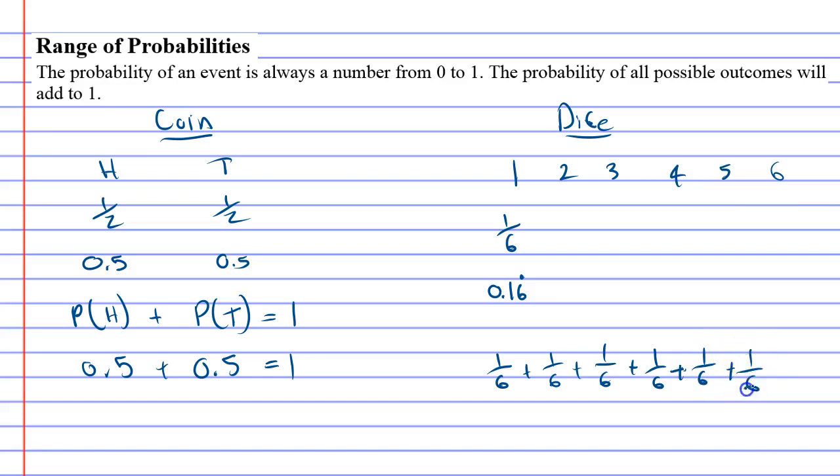because when you add fractions up, the denominator stays the same, and you add the top numbers up. And since there's 6 ones, it's 6 over 6, or 1.